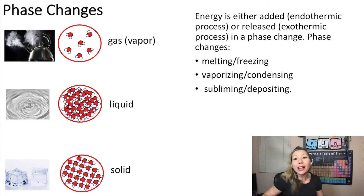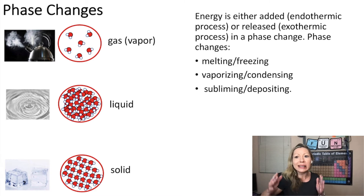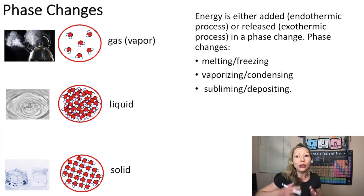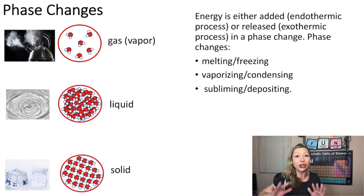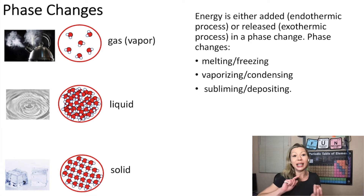Let's talk about phase changes. You already are familiar with these processes. This is basically the change from one state to another without changing the chemical composition of a compound. So let's say we have water — it can be ice, it can be liquid water, or water vapor.